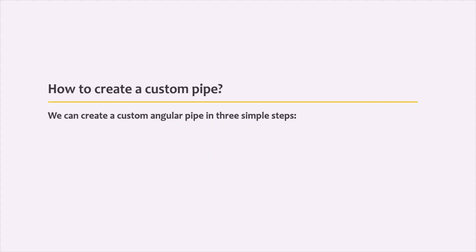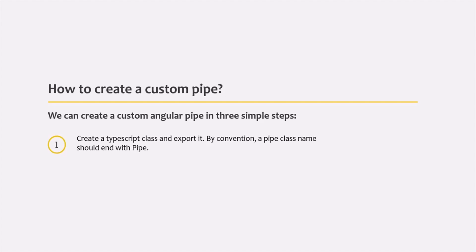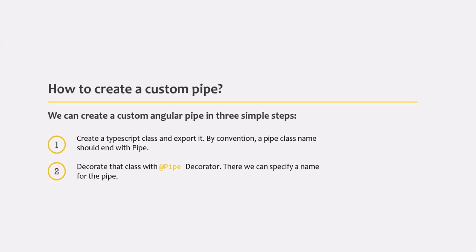We can create custom pipes in Angular in three simple steps. In the first step, we need to create a TypeScript class and export it. In the second step, we need to decorate that TypeScript class with a pipe decorator. And in the third step, we need to inherit the PipeTransform interface and implement its transform method.